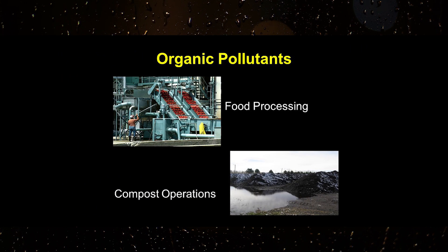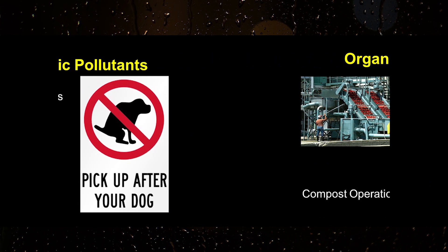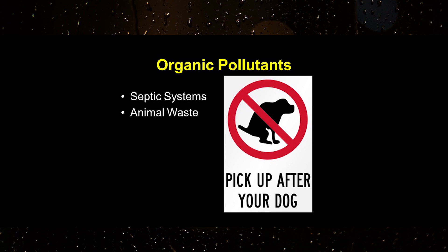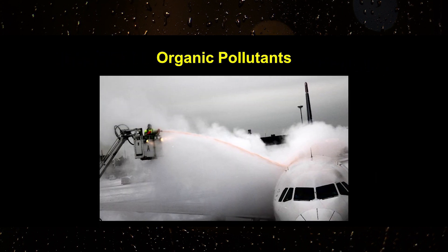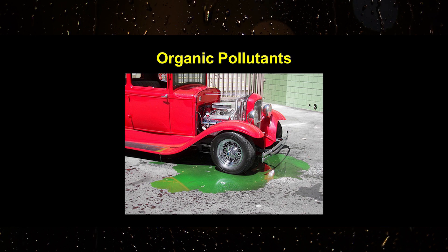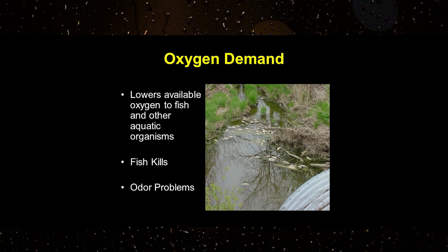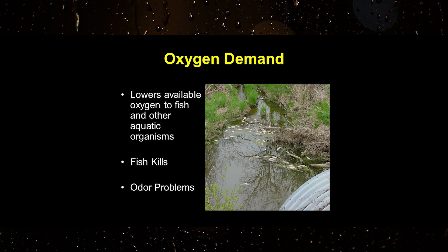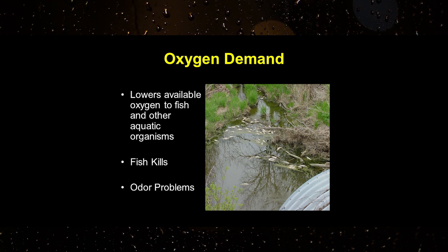The following activities are sources of organic pollutants: food processing, composting operations, failing septic systems, animal waste, airplane de-icing activities that use glycol-based products, and improper handling of antifreeze. Stormwater runoff can deposit large quantities of these substances in our lakes or streams if not properly managed. As these substances are broken down by bacteria, levels of dissolved oxygen in the aquatic environment are decreased. Oxygen depletion is a common cause of fish kills and other problems, especially in areas of shallow and slow moving waters.